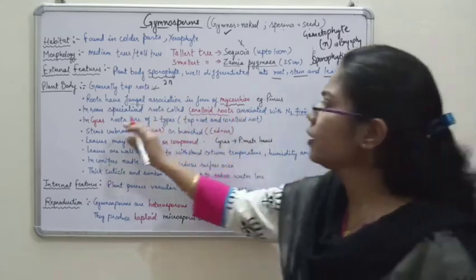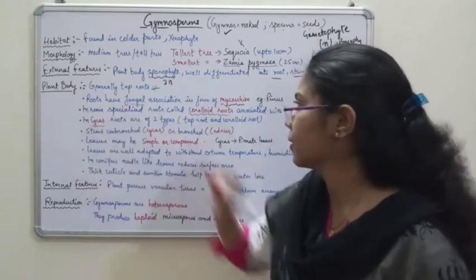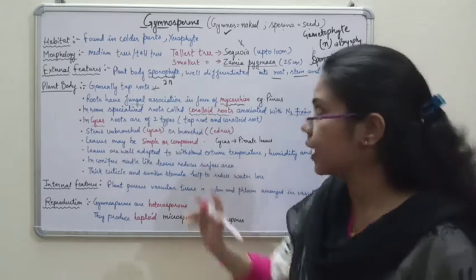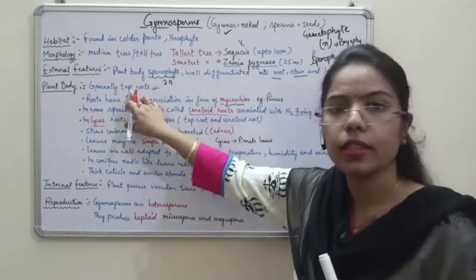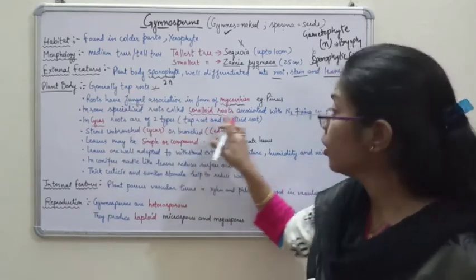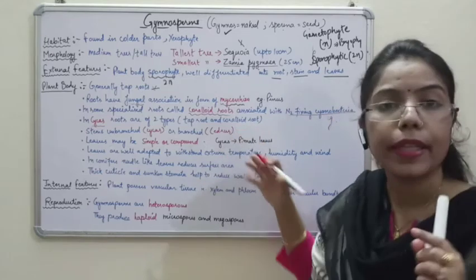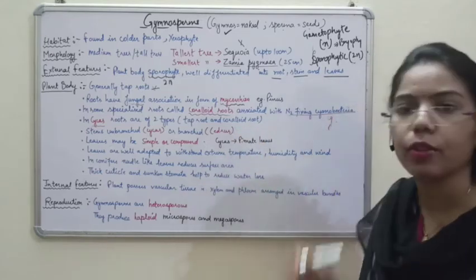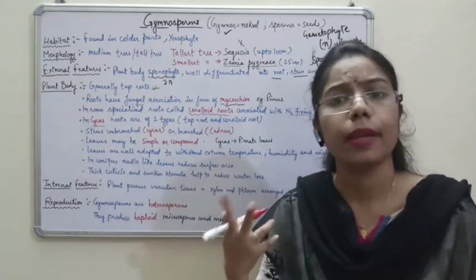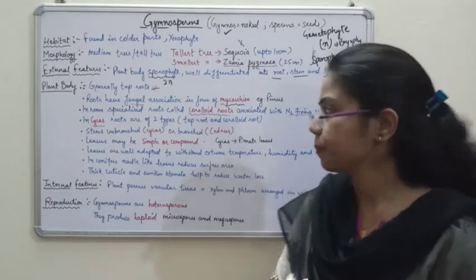Looking at the example of Cycas — in Cycas there are two types of root system. As we said, generally they have tap roots. But along with this tap root, they also have coraloid roots because they make an association with cyanobacteria. This example is very important: Cycas has two types of roots — tap root and coraloid roots.